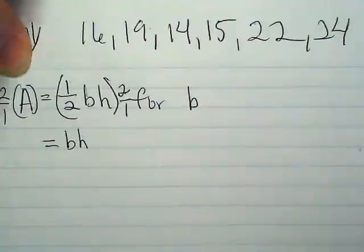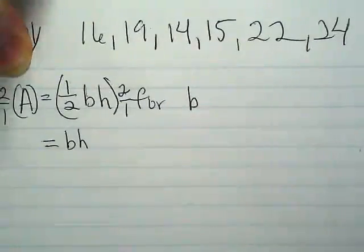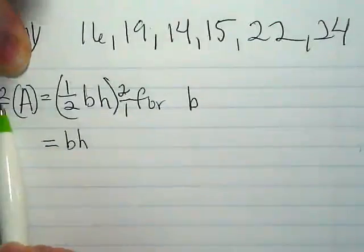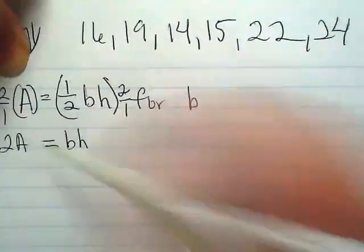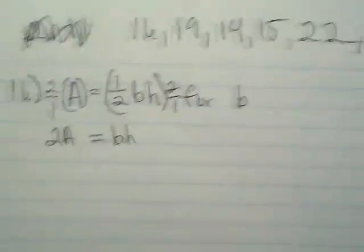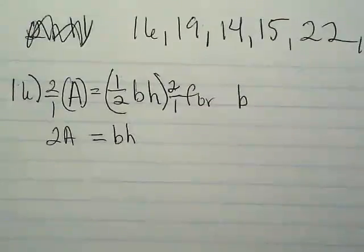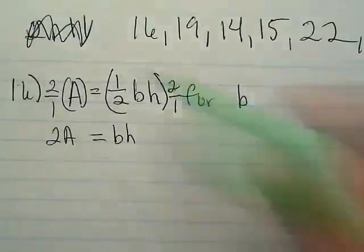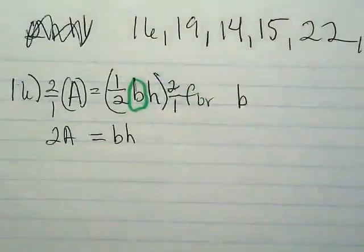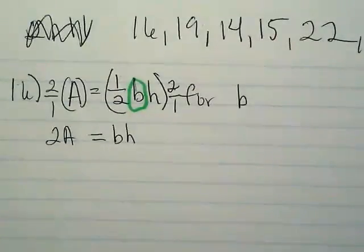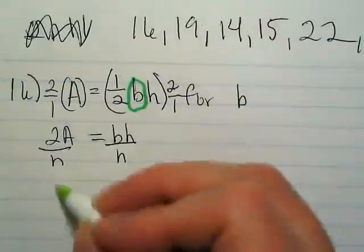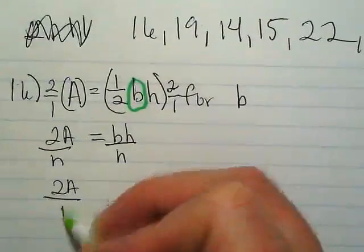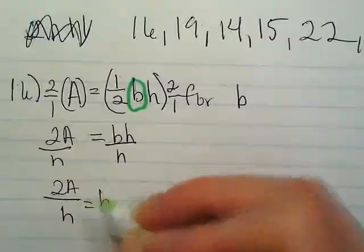What am I going to have on the left side? Area. Two times the area. So this is going to say 2A. I want to isolate the B. That's our goal. So I need to divide by the H. And that's my answer. 2A divided by the height is equal to the base.